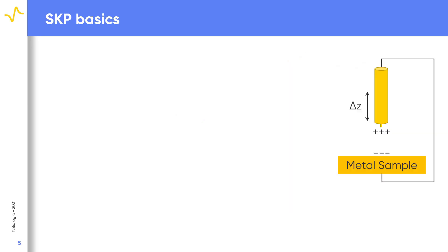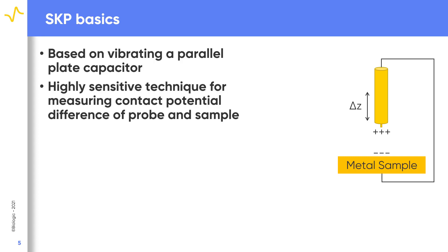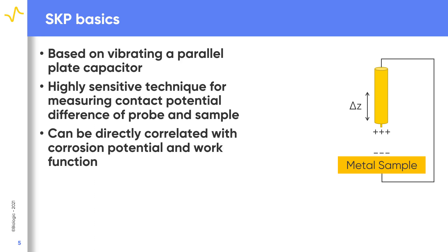Regardless of the signal of interest, the basics of the technique are the same. Scanning Kelvin probe is based on a vibrating parallel plate capacitor. It is used for measuring the contact potential difference between the probe and the sample, providing a highly sensitive measure of the sample surface. The contact potential difference measured in SKP can be directly correlated to the corrosion potential or the work function of the sample.